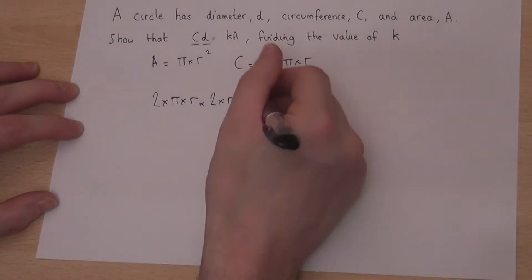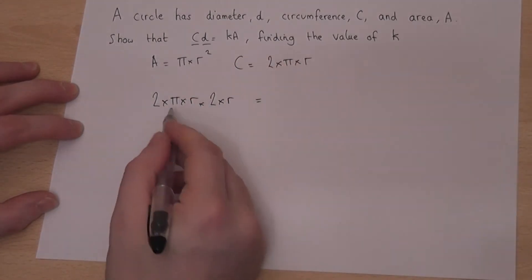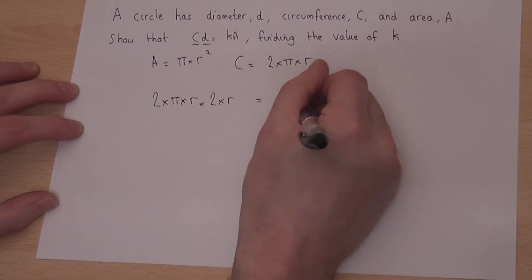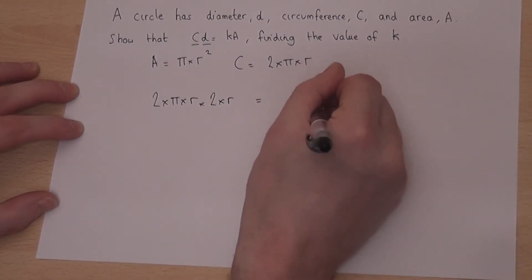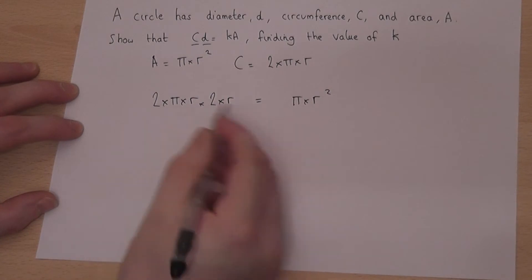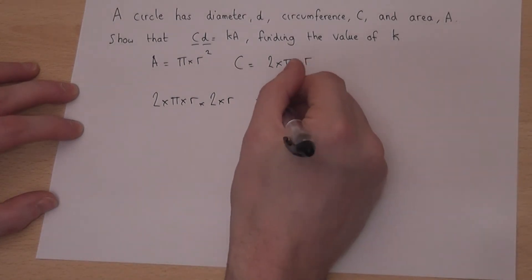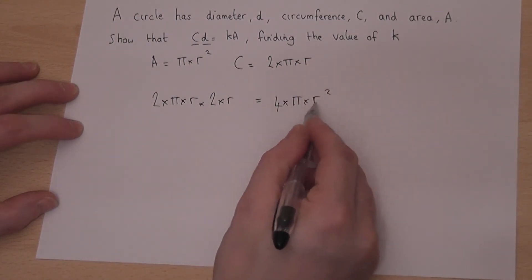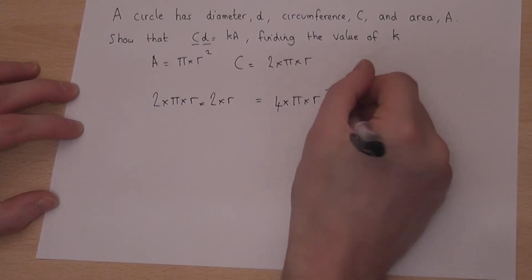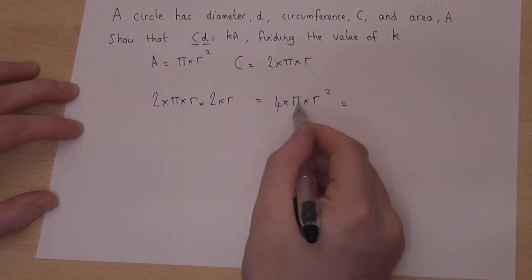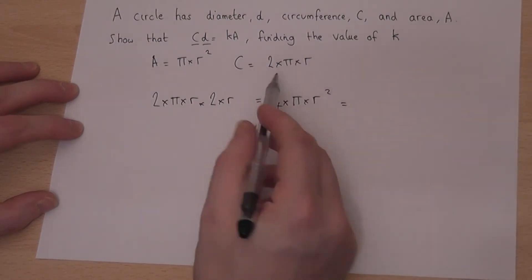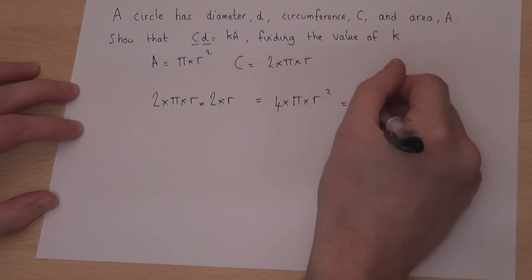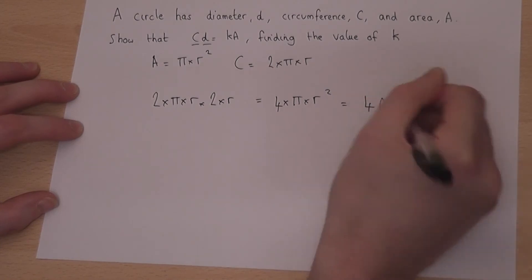If I work this out, I've got a pi, an r, and an r, so that's pi times r squared, and 2 times 2 is 4, so it becomes 4 times pi times r squared. Well, pi r squared is just the area formula, so this equals 4 times a.